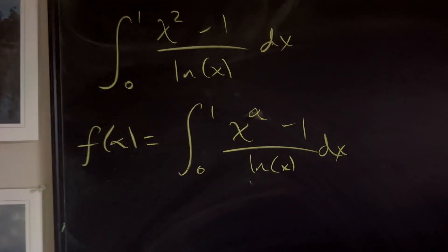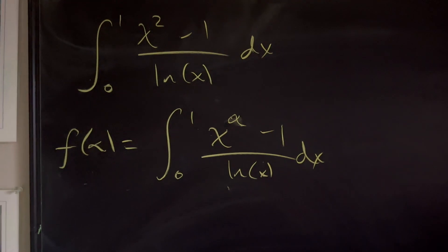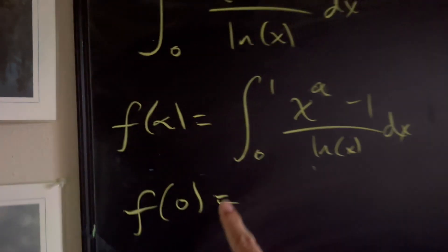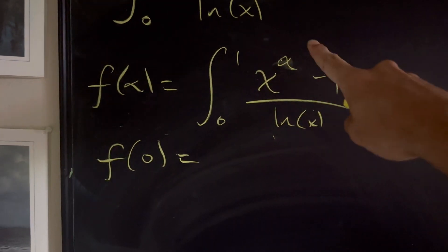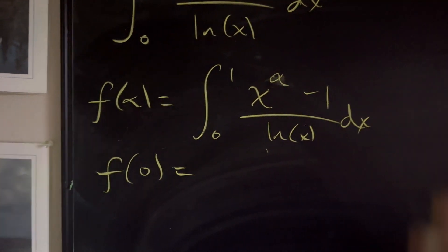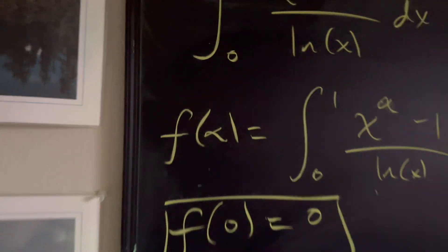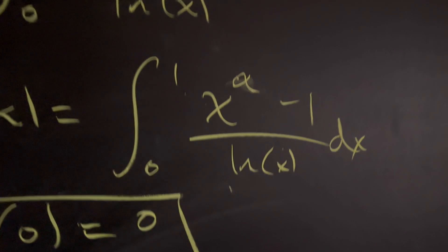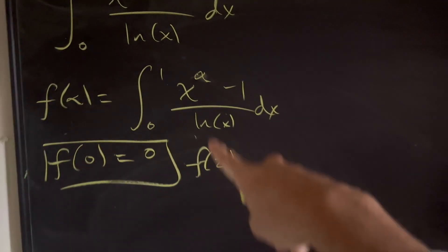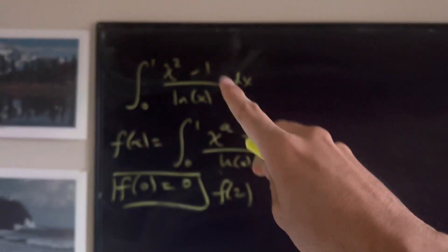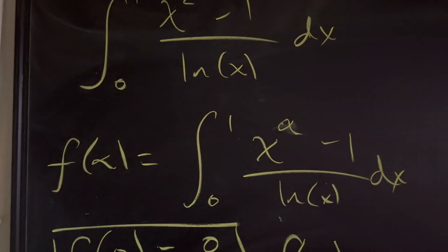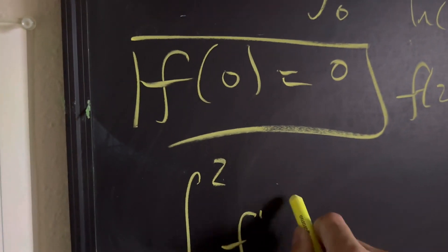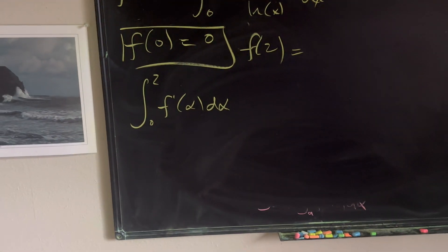The reason we do this is because when we create our condition, it actually cancels out the integral. The condition we want is f(0). If you insert 0 into alpha, x to the power of 0 is 1, and 1 minus 1 is 0, so you have the integral of 0, which is just 0. At the very end, what we want to find is f(2), because when you put 2 in for alpha, you basically get the original integral. So what we want to find is the integral from 0 to 2 of f prime of alpha with respect to alpha.